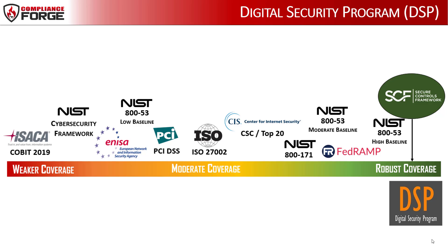If you visualize the DSP as a buffet table of cybersecurity and privacy policy standards, controls, and metrics, it offers a perspective of being able to pick and choose your requirements. Once you determine the applicable statutory, regulatory, and contractual obligations for your organization, it is straightforward to identify a customized control set specific to your unique compliance obligations. This can help avoid extraneous requirements that are not applicable to your organization.